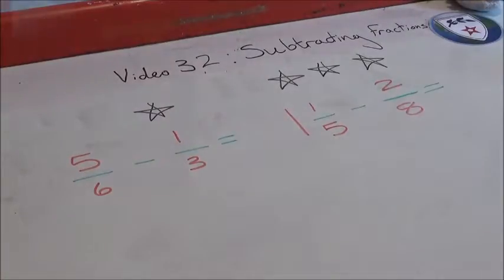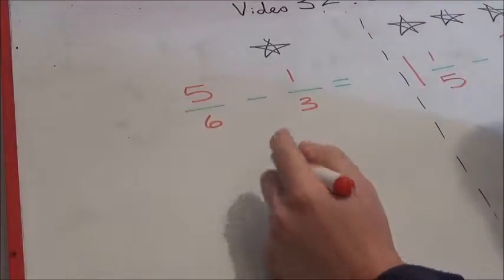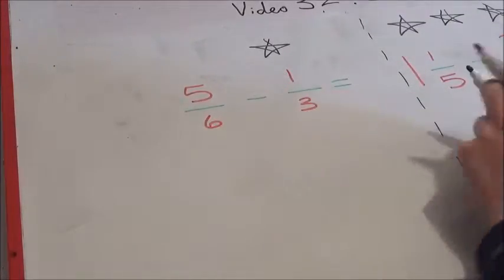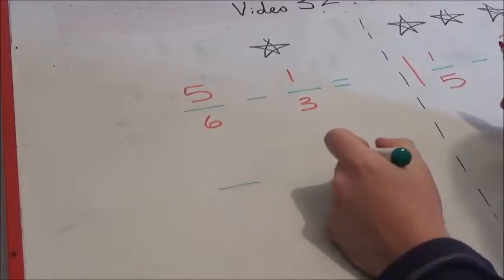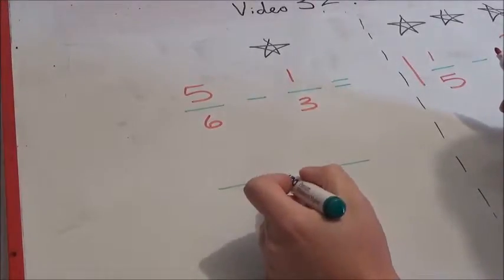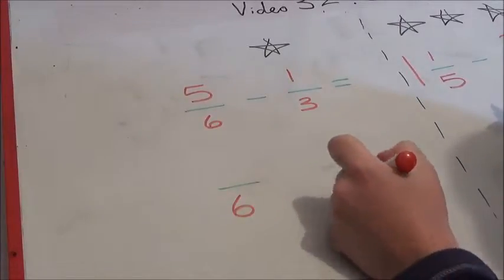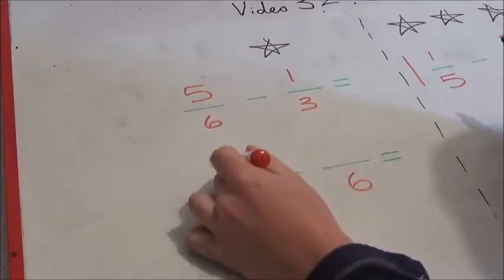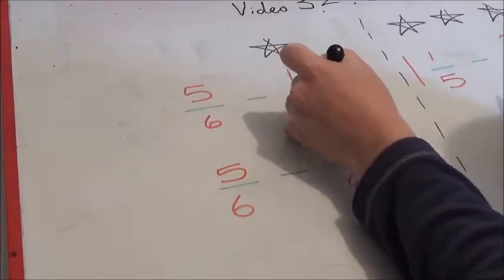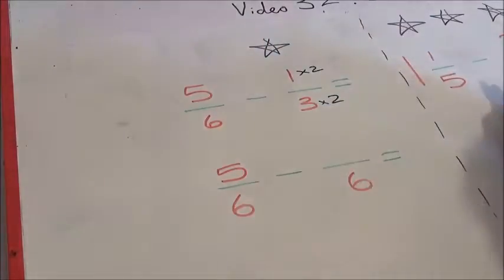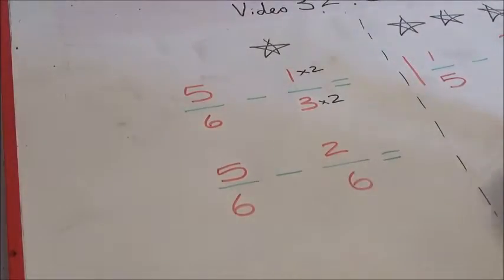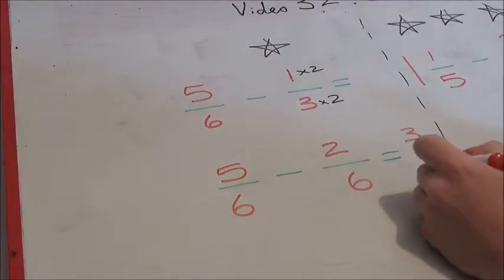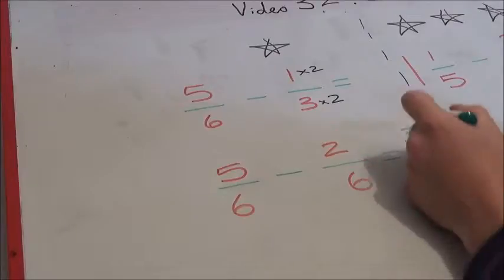Right, so first of all, five-sixths take away one-third, and we need to convert. Let's convert. I think our third—we're thinking of common multiples, and six is a common multiple of three and six. So it makes sense to do the easiest changeover. First of all, five-sixths can stay the same, but then we have to multiply three by two to get to six. So we're going to have to multiply one by two, which is going to be two-sixths. And then five-sixths take away two-sixths, which equals three-sixths.